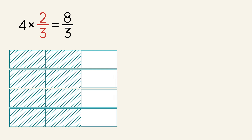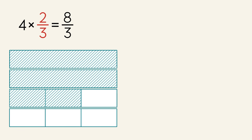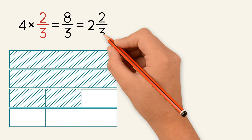However, that's an improper fraction, so we need to convert it to a mixed number. We regroup thirds to make wholes — one whole and another whole. So we have two wholes and two-thirds. The answer is two and two-thirds.